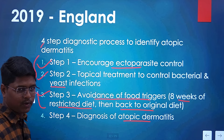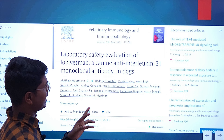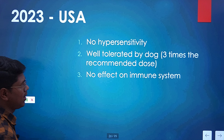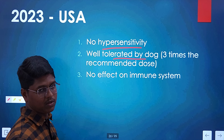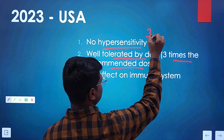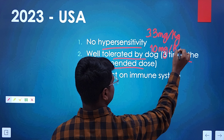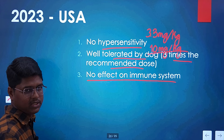The last article is the 'Laboratory Safety Evaluation of Lokivetmab, a Canine Anti-Interleukin-31 Monoclonal Antibody in Dogs.' This studied side effects and found that there is no hypersensitive reaction — the drug is very well tolerated. Cyclosporine is not well tolerated if you double or triple the dose, causing vomiting and GI symptoms. In this study, lokivetmab was evaluated at the therapeutic dose of 3.3 mg per kg and even at 10 mg per kg — dogs were still well tolerating. Unlike glucocorticoids, it does not suppress the immune system.